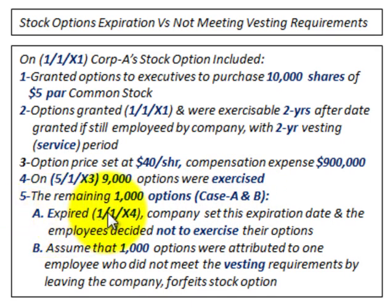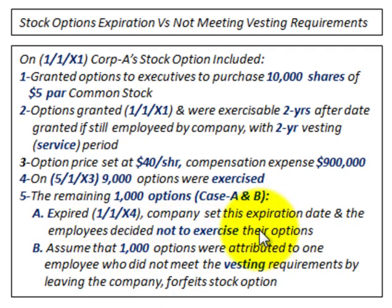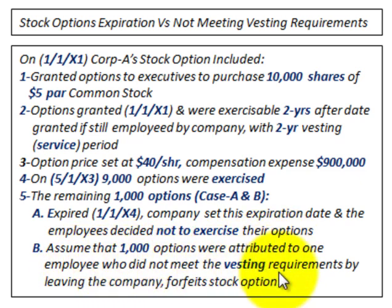Case A is where the options expired in 11x4 — the company set this expiration date and the executives decided not to exercise their options. In Case B, 1,000 of these options were attributed to one executive who did not meet the vesting requirements by leaving the company, so he forfeits those thousand stock options.